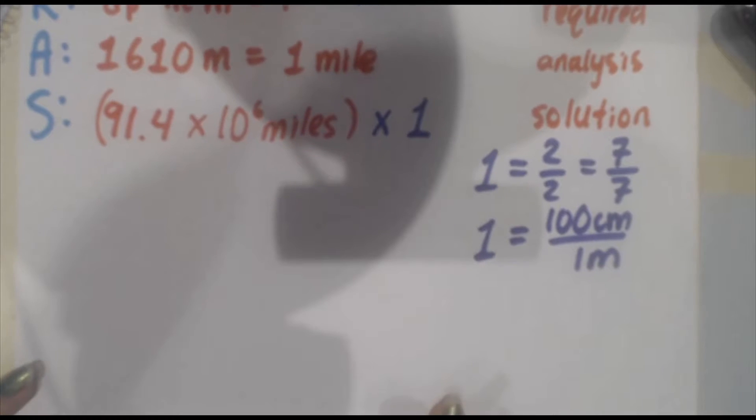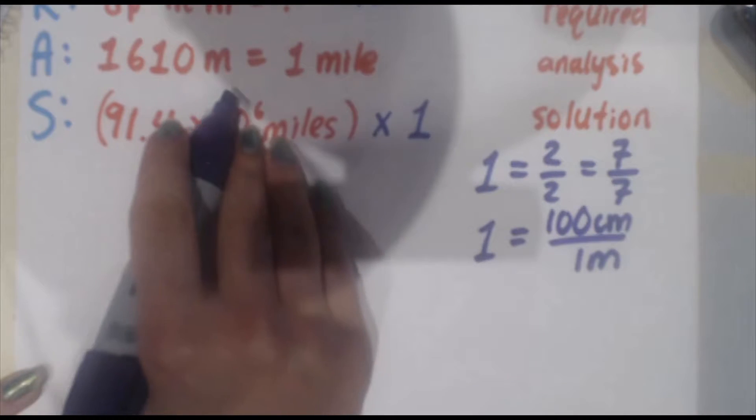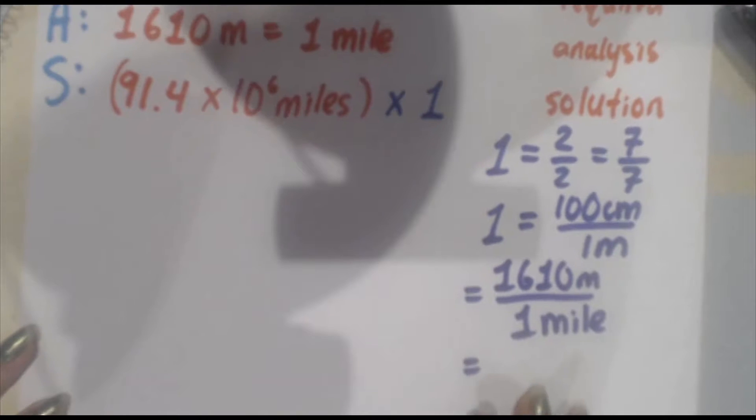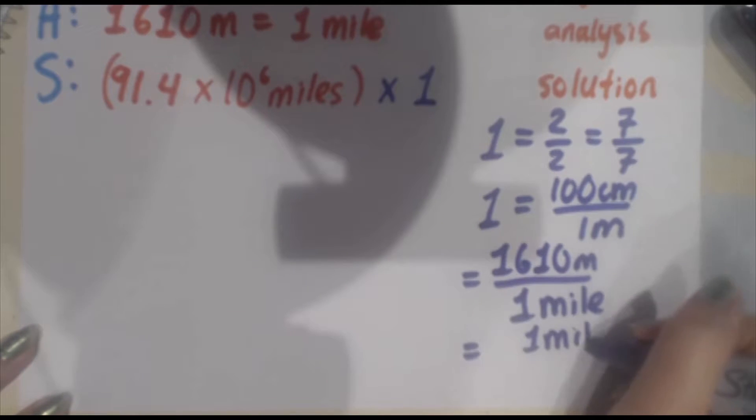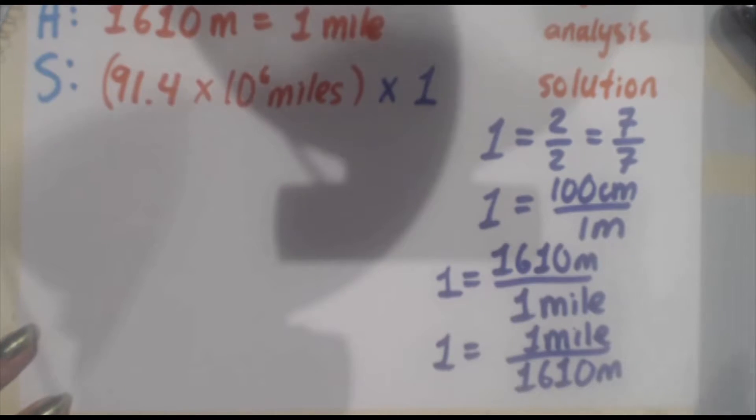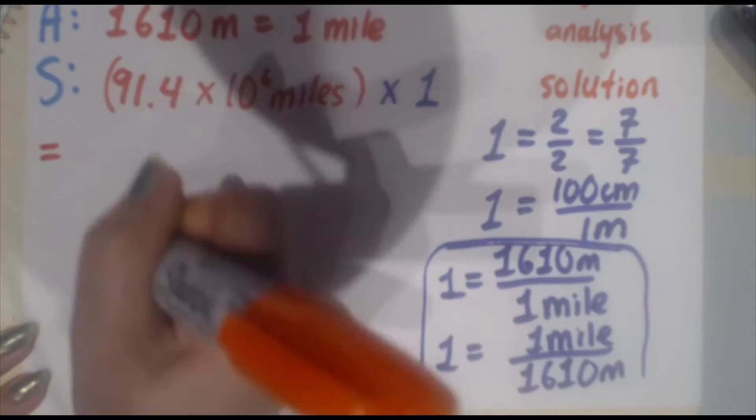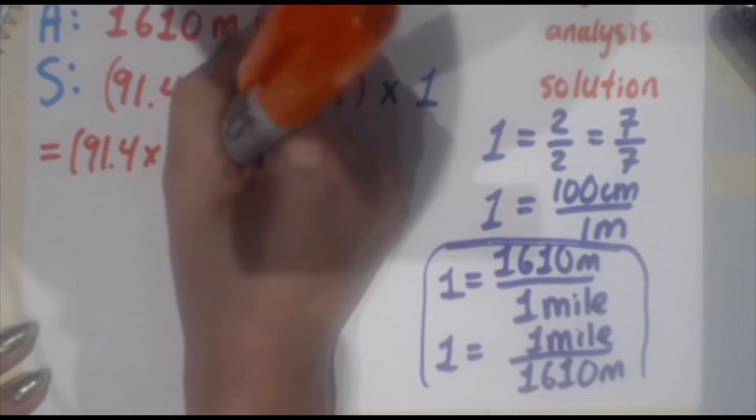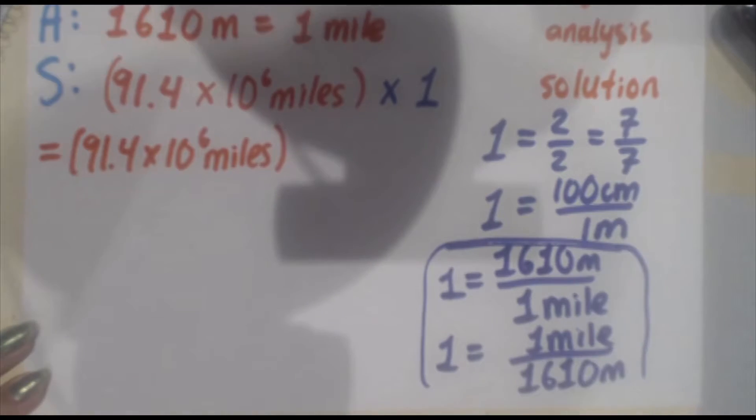This ratio is in fact also equivalent to 1. Why? Because the value in the numerator and denominator are equal. 100 centimeters equals 1 meter. In this particular problem, we know that 1,610 meters equals 1 mile. So we can rewrite 1 in the following ways: 1,610 meters over 1 mile, which is equal to 1 mile over 1,610 meters. These are both equal to 1. Now, the key for you is you have to determine which one of these 1s are you going to use in your calculation.